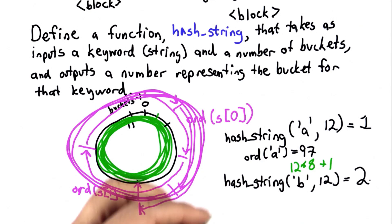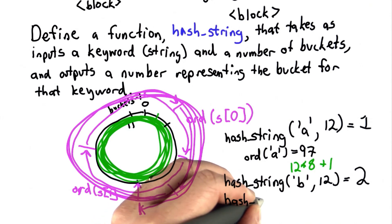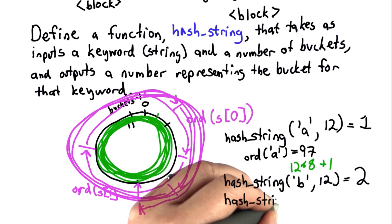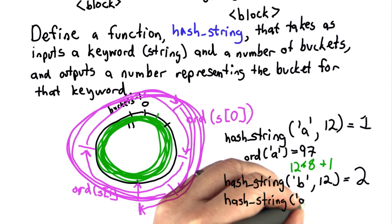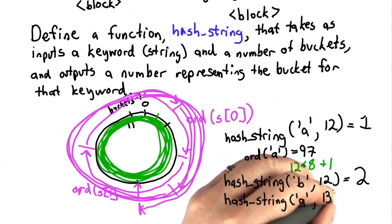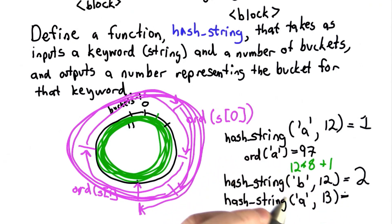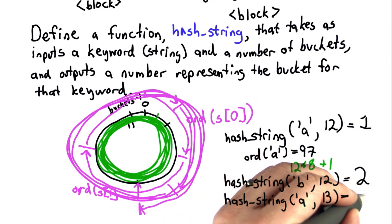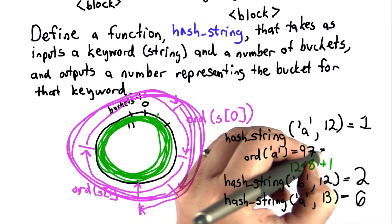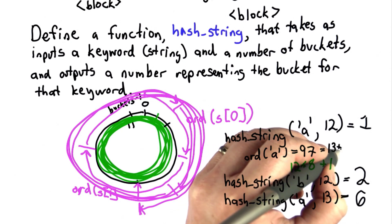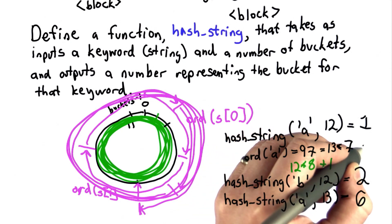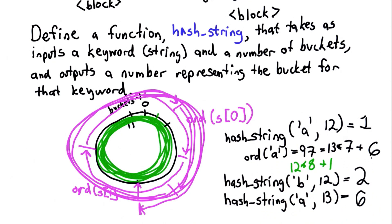If we change the number of buckets, the results will be different. Let's say instead of having 12 buckets, we have 13, and we tried hash_string on the single letter string A with 13 buckets. The result there should end up being 6, and the reason it's 6 is because 97 is equal to 13 times 7 plus 6. So the size of the hash table matters, as well as the string.